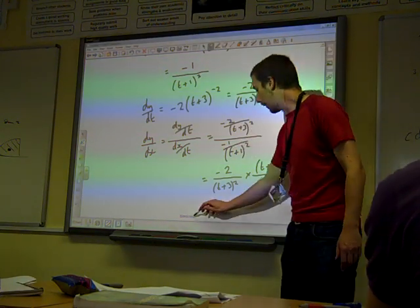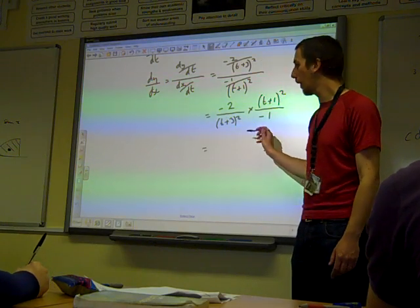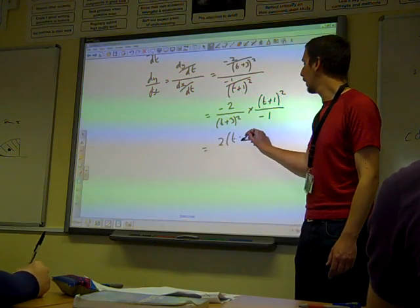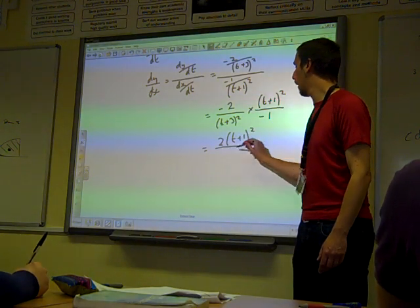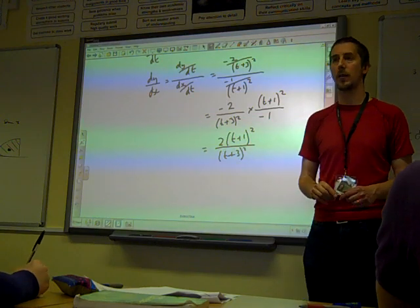And so we end up with, well, the minus signs have cancelled out. We've got 2 t plus 1 squared over t plus 3 squared.